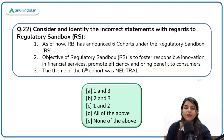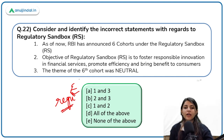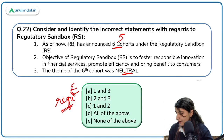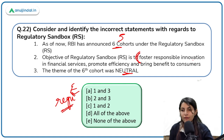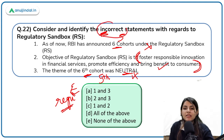Regarding the regulatory sandbox: as of now, RBI has announced six cohorts — incorrect; it is actually five cohorts. The objective of regulatory sandbox is to foster responsible innovation in financial services, promote efficiency, and bring benefit to consumers — correct. The theme of the sixth cohort was neutral — incorrect; it is the fifth cohort whose theme was neutral. The second statement is correct; the first and third are incorrect. Please pay attention to whether a question asks for correct or incorrect statements.